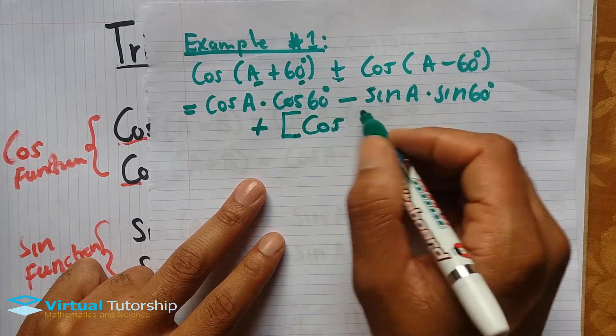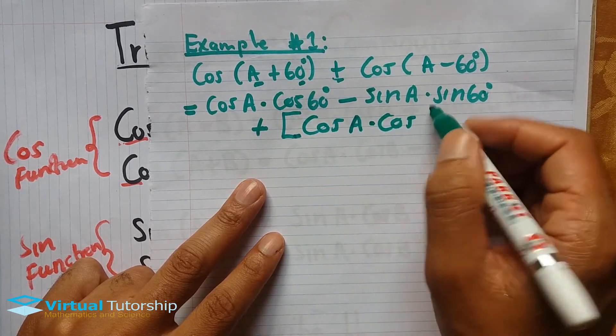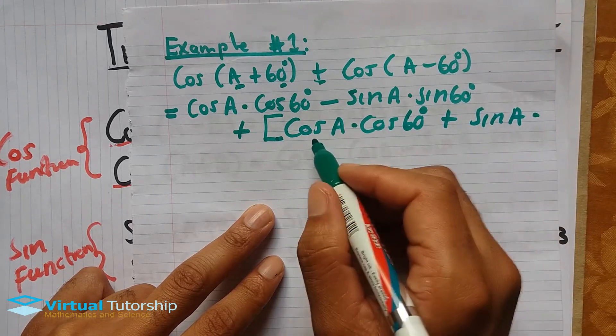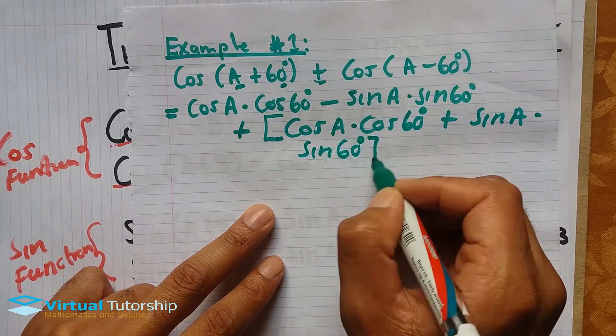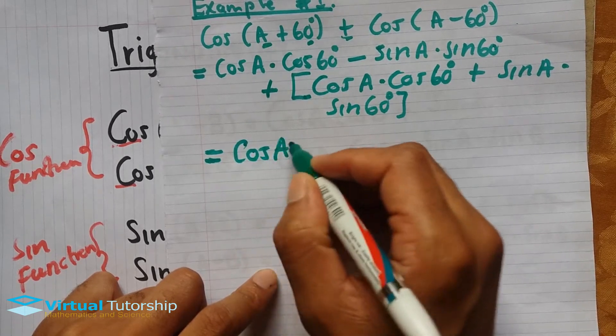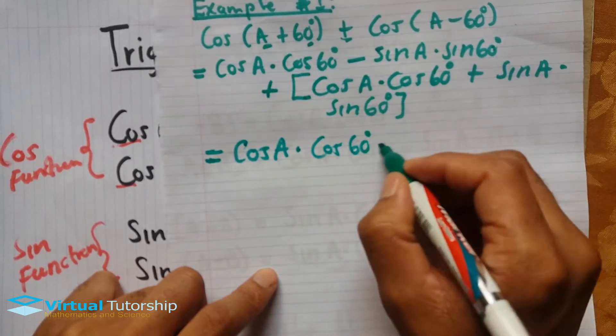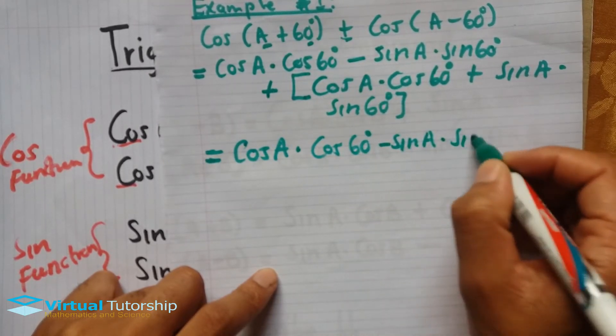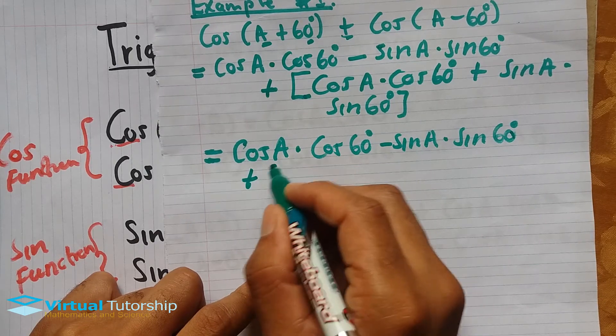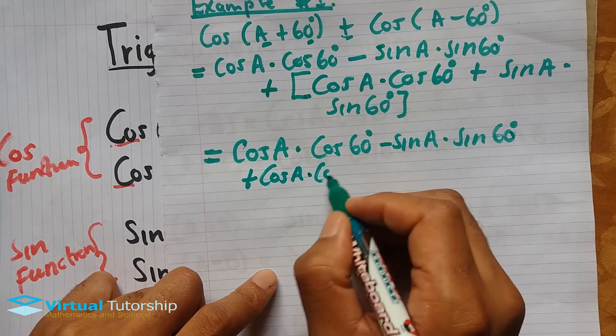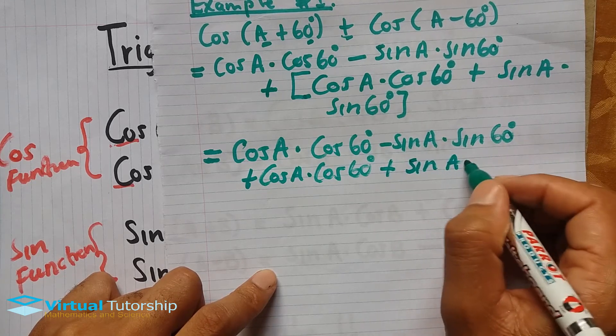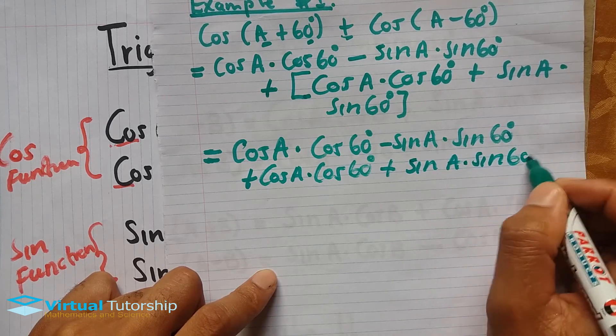The solution: when you expand using the compound formula, you get cos(A)·cos(60°) - sin(A)·sin(60°) plus the positive sign inside the brackets plus sin(A)·sin(60°).